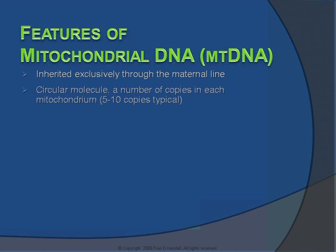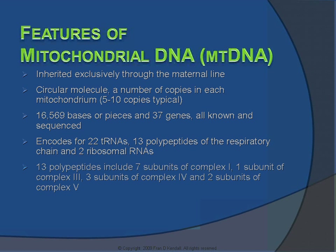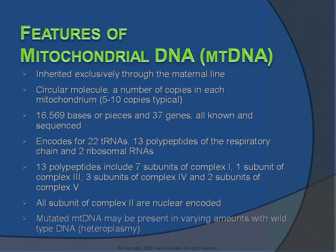In contrast, the mitochondrial DNA is inherited exclusively through the maternal line, or through mom. A number of copies of this mitochondrial DNA is located in each mitochondrion, and many mitochondria are present in a given cell. The mitochondrial DNA is composed of 16,569 base pairs and 37 total genes — all of which have been sequenced. They consist of approximately 22 tRNAs, 13 polypeptides or proteins of the respiratory chain, and 2 ribosomal RNAs.